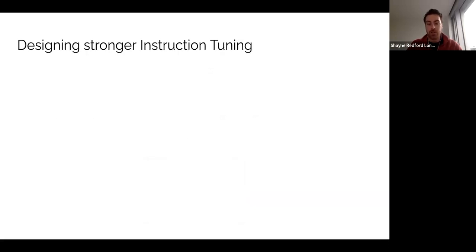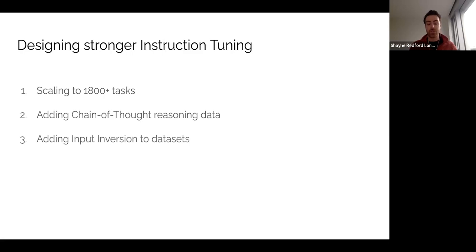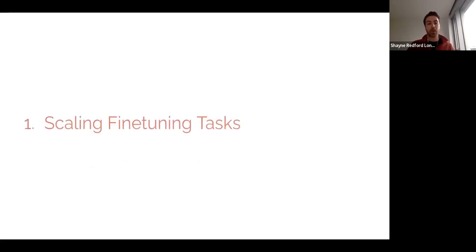So to design stronger instruction tuning, we go over five different methods. The first is scaling to 1,800 tasks, which at the time was the most that prior work had done. Adding chain-of-thought fine-tuning data to this collection of instruction tuning tasks. Enriching the diversity of tasks from existing datasets using input inversion. And then at training time, mixing both zero-shot and few-shot templates together. And lastly, balancing the different sources of data is important to achieving strong results.